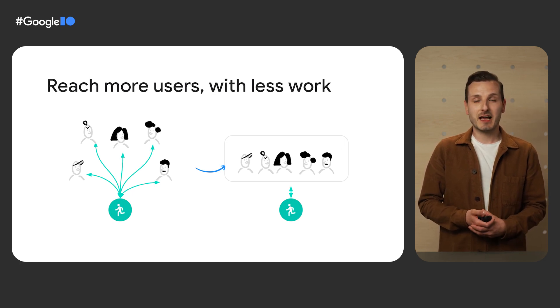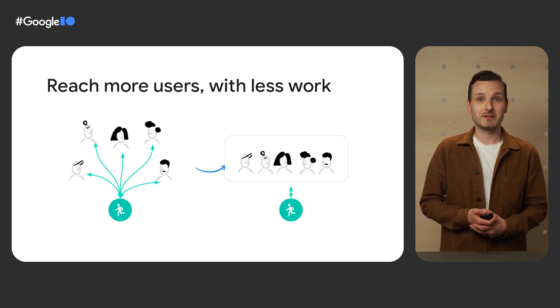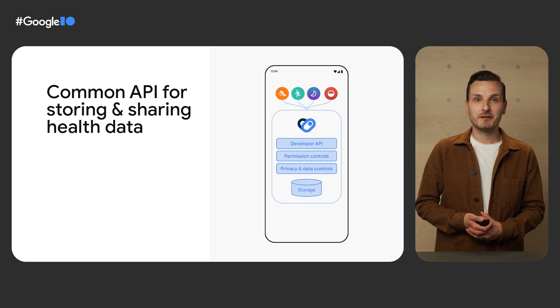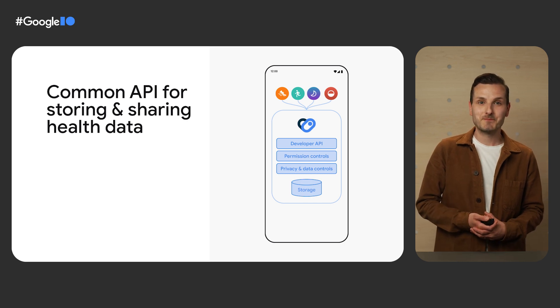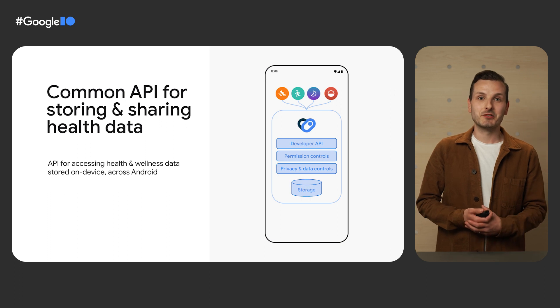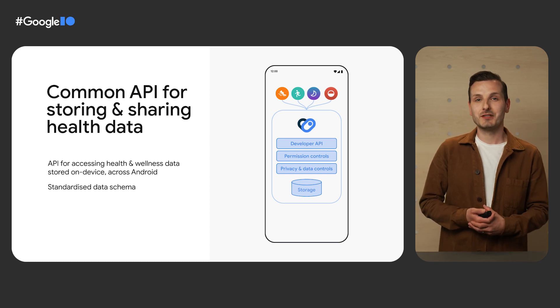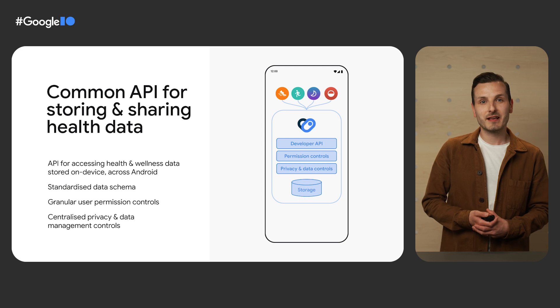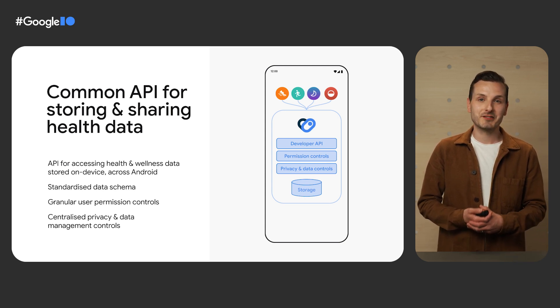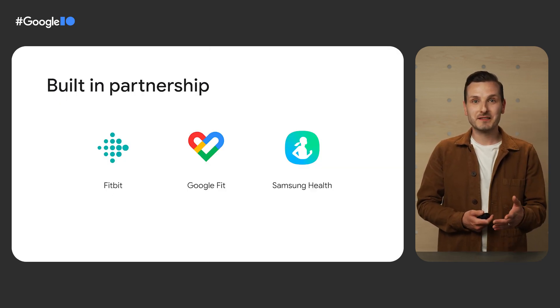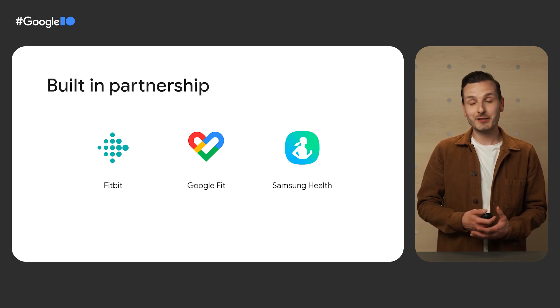Our long-term vision is to help you reach 3 billion-plus Android users with one integration. And we've been working very hard to bring this to life. Today, we're so excited to introduce you to HealthConnect by Android. HealthConnect is a common API for storing and sharing health data on Android phones. Developers can read from and write data to an on-device data store. We've standardized the schema and API behavior, making it easy for you to use the data. We've centralized the permissions and the privacy controls, making it clear and simple for your users to manage this data and access to it. We are so happy to announce we're bringing together Fitbit, Google Fit, and Samsung Health under this one united API.